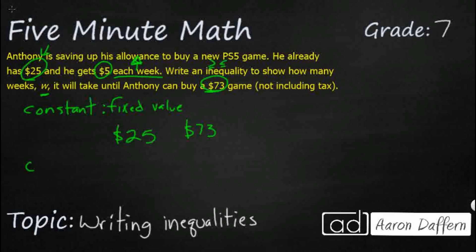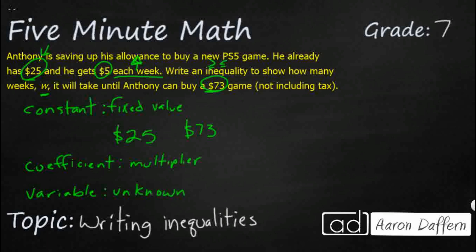We're also going to look to see if we have a coefficient — and we do. A coefficient is a multiplier, something we're going to multiply by our variable, which is our unknown. The variable here is W, which stands for weeks. We don't know how many weeks it's going to take for him to get $73, but we do know he gets $5 a week — so that $5 is our coefficient.